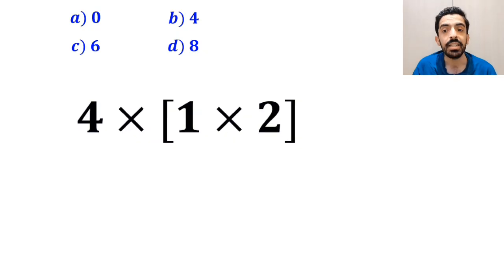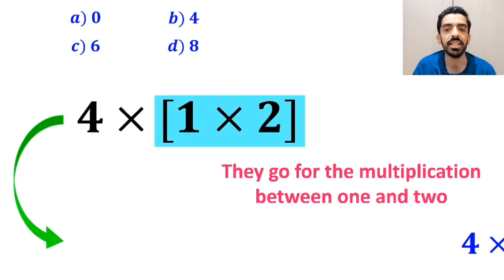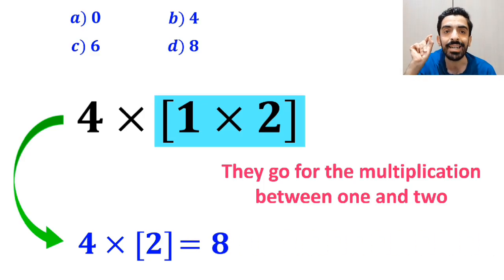In the final step, they go for the multiplication between 1 and 2, and replace this expression with 4 times 2, which ultimately gives them the answer 8.